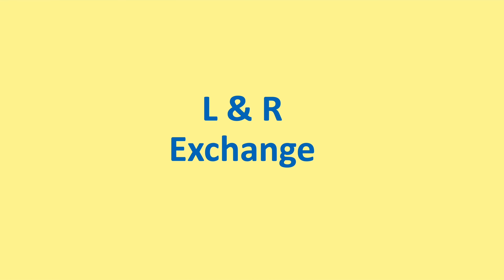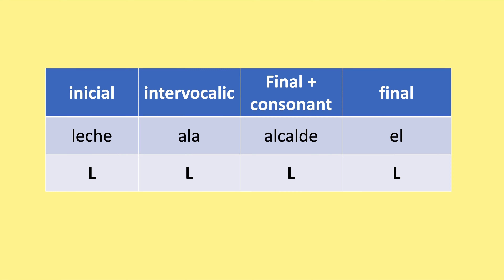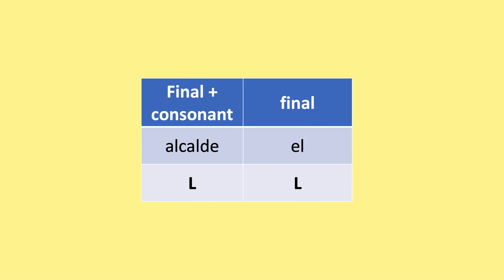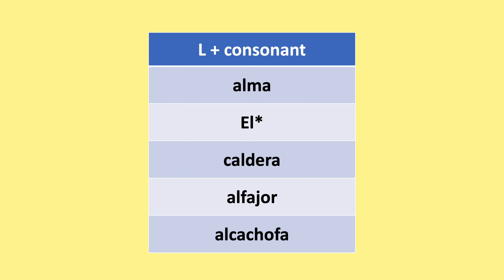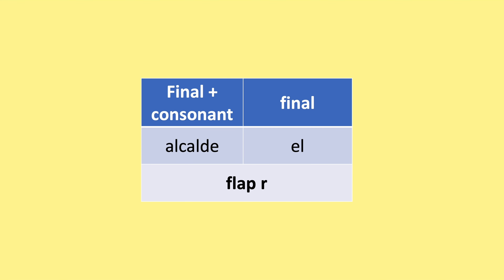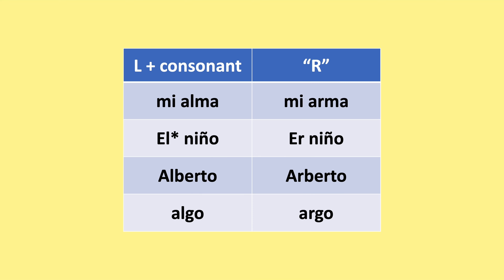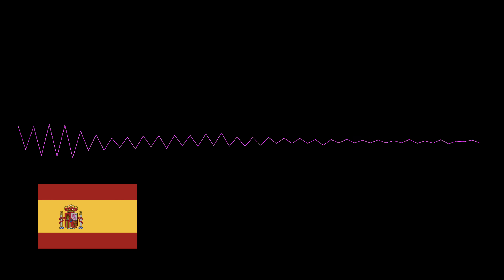L-R exchange: you can find the L in Spanish in the initial position, the intervocalic position, the syllable-final plus consonant position, and the final position. The initial and intervocalic positions won't really change into an R sound, so we focus on the syllable-final consonant and final positions. When you have L plus a consonant — such as in alma, el, caldera, alfajor, alcachofa — it is sometimes turned into a flap R in some dialects. So instead of 'mi alma' you hear 'mi arma', 'el niño' becomes 'er niño', 'Alberto' becomes 'Arberto', 'algo' becomes 'argo'.